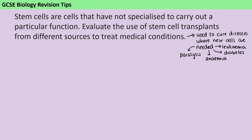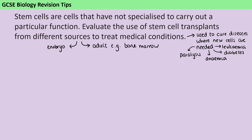If we think about the different sources of stem cells, there are really two key types. There are embryonic stem cells, which come from a new embryo that has only divided a couple of times to make a few identical cells. And then there are adult stem cells — for instance, the stem cells found in your bone marrow.